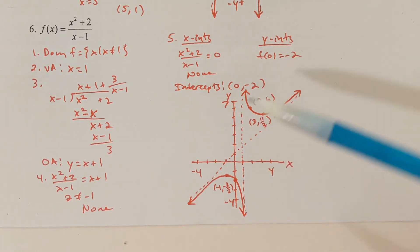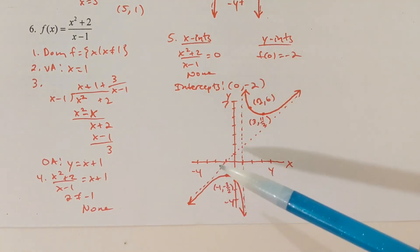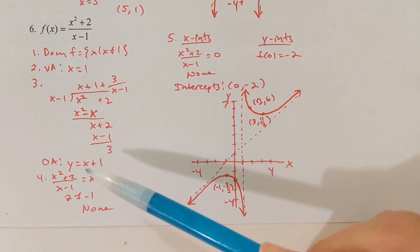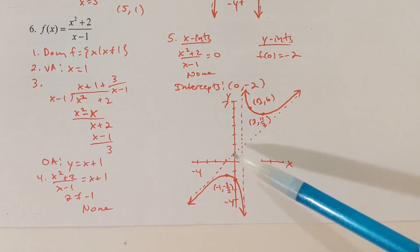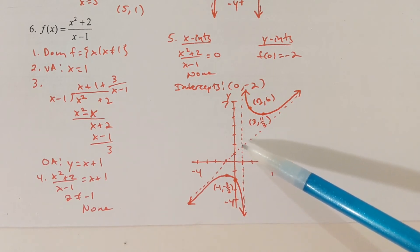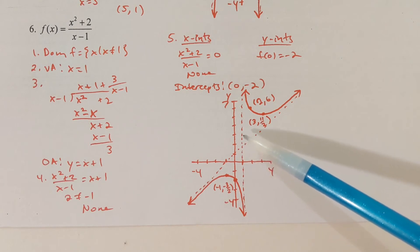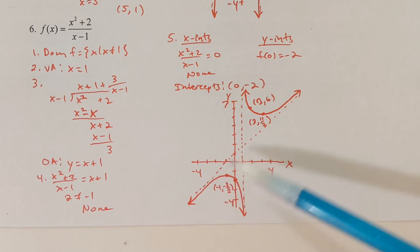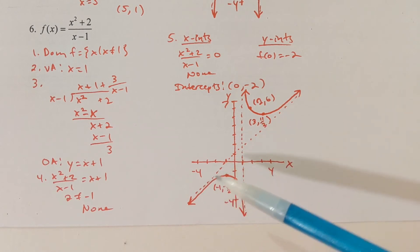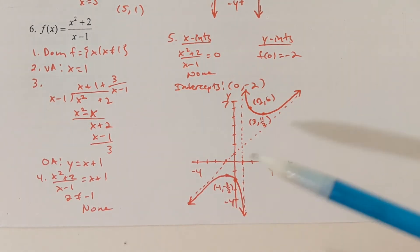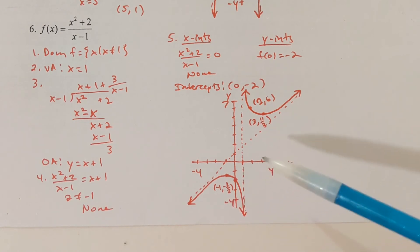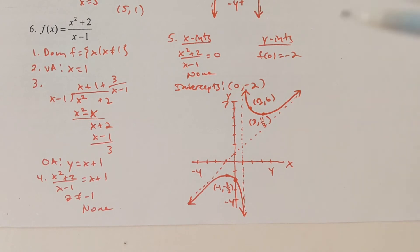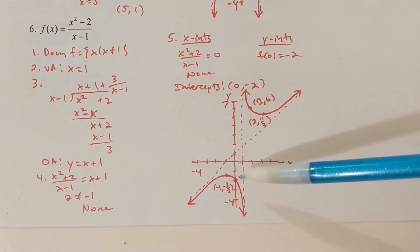I have two asymptotes on the graph: one at x equals 1 and one at y equals x plus 1. The oblique asymptote y equals x plus 1 has y-intercept 1 and slope 1. Starting at (0, 1) and using slope to plot points, I can draw this as a dotted line since it's an asymptote. But I only know one intercept point on the actual graph.